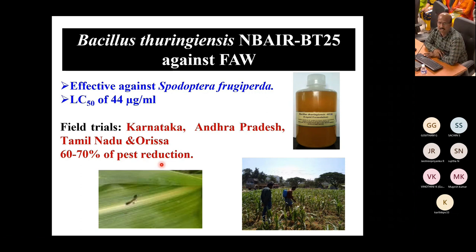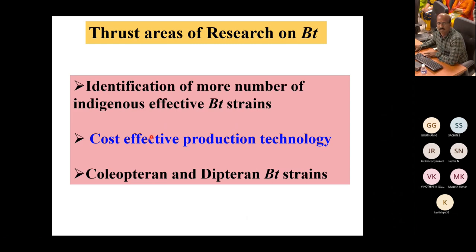The future thrust for BT is the same — identification of very good strains and cost-effective production is important because the production cost needs to be low for companies in the biopesticide industry. So far, mostly Lepidoptera-targeting BT strains have come; we are currently focusing on Coleoptera- and Diptera-based BT strains.